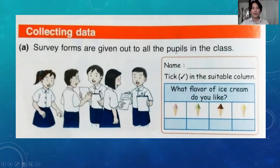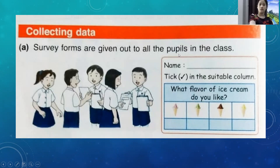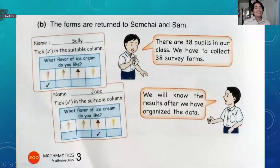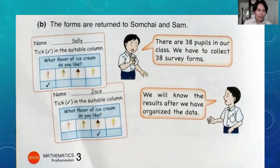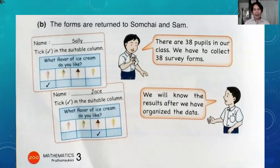Survey forms are given to all the pupils in the class. When we say pupils — pupils is an American English word meaning students, another word for students. Now if you distribute survey forms, pupils write their name and tick their favorite ice cream flavor, so you don't have to ask them one by one. For example, Sally chose chocolate and strawberry, and Jace chose chocolate. There are 38 pupils in the class, so we have to collect 38 survey forms.